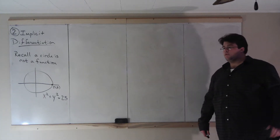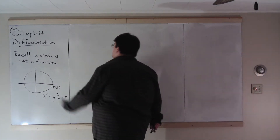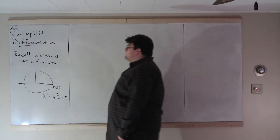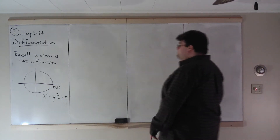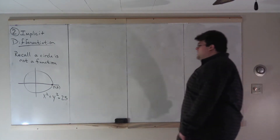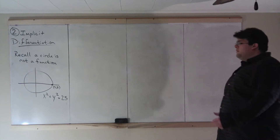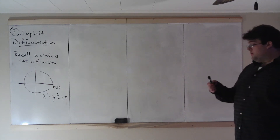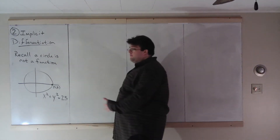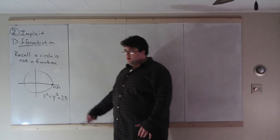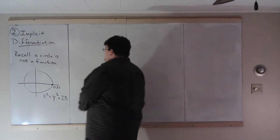The next consequence of the chain rule we're going to look at is called implicit differentiation. Before doing an example, recall that a circle is not a function. But a circle does satisfy an equation relating x and y — this is the circle of radius 5 centered at (0,0). All of the functions we've been taking derivatives of, we could isolate y — we could solve for y. But if you tried to solve for y here, you would get a positive side and a negative side because this isn't a function.